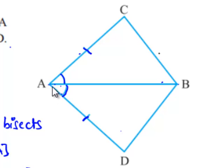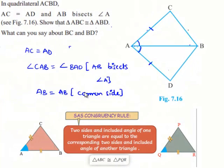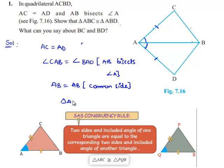Therefore, according to SAS property of congruency, triangle ABC is congruent to triangle ABD.